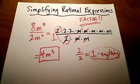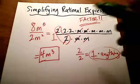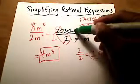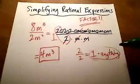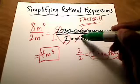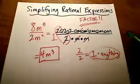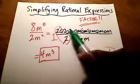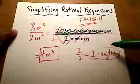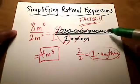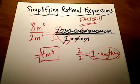One more thing before the next example: when I factored 8m to the fifth and wrote it this way, notice that each of these terms was being multiplied together — all factors multiplied up top, and same thing down below: 2 times m times m. It's important to know that multiplication must be going on up top and in the denominator. The reason I can cross things out is because division — that big fraction bar — and multiplication are opposite operations. That's what allows me to cross things out.